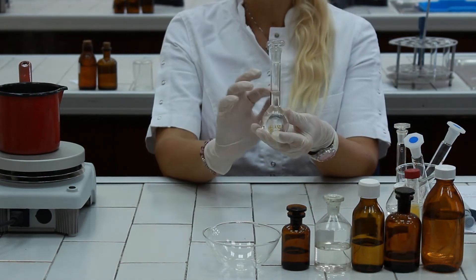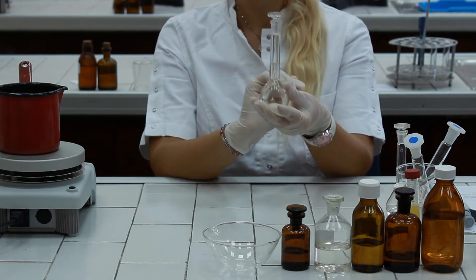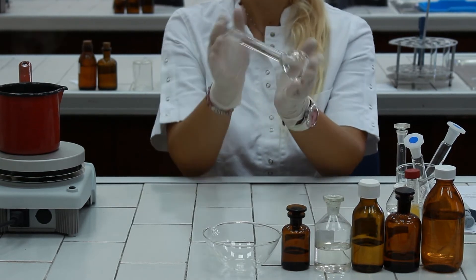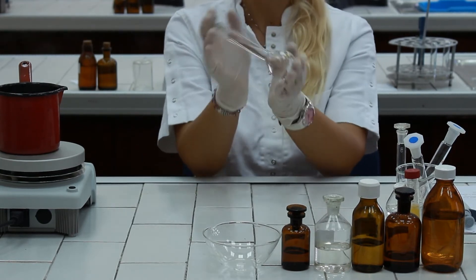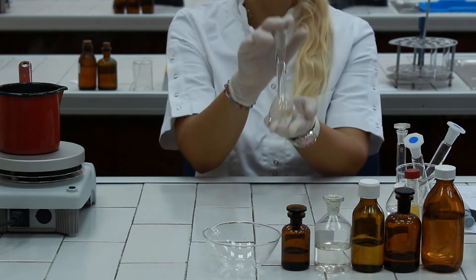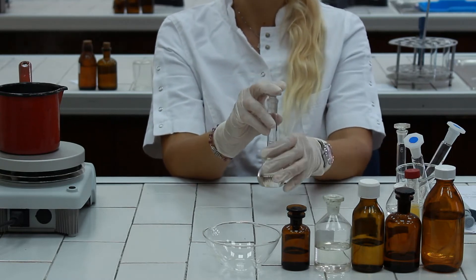When we adjusted the level of the liquid at the graduation mark, mix the volumetric flask few times upside down in order to homogenate the mixture.